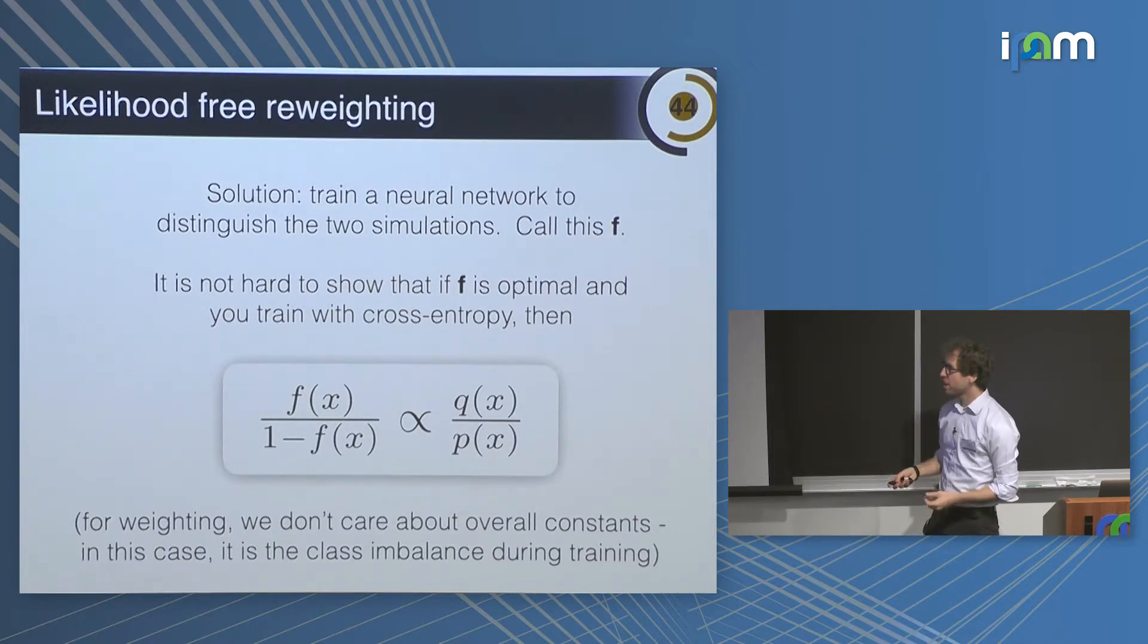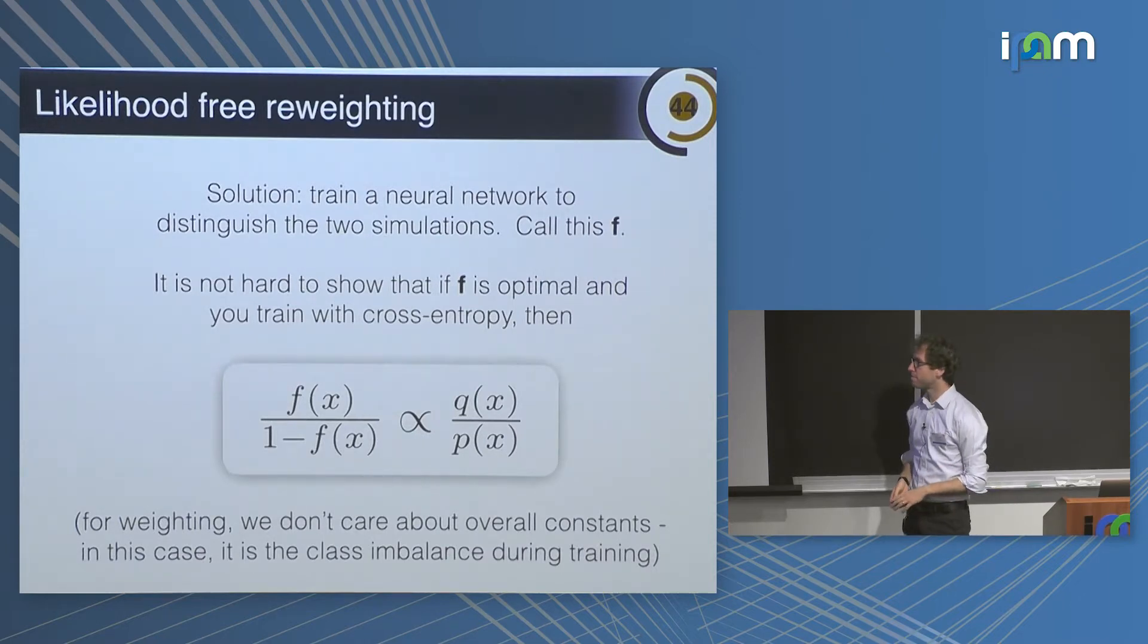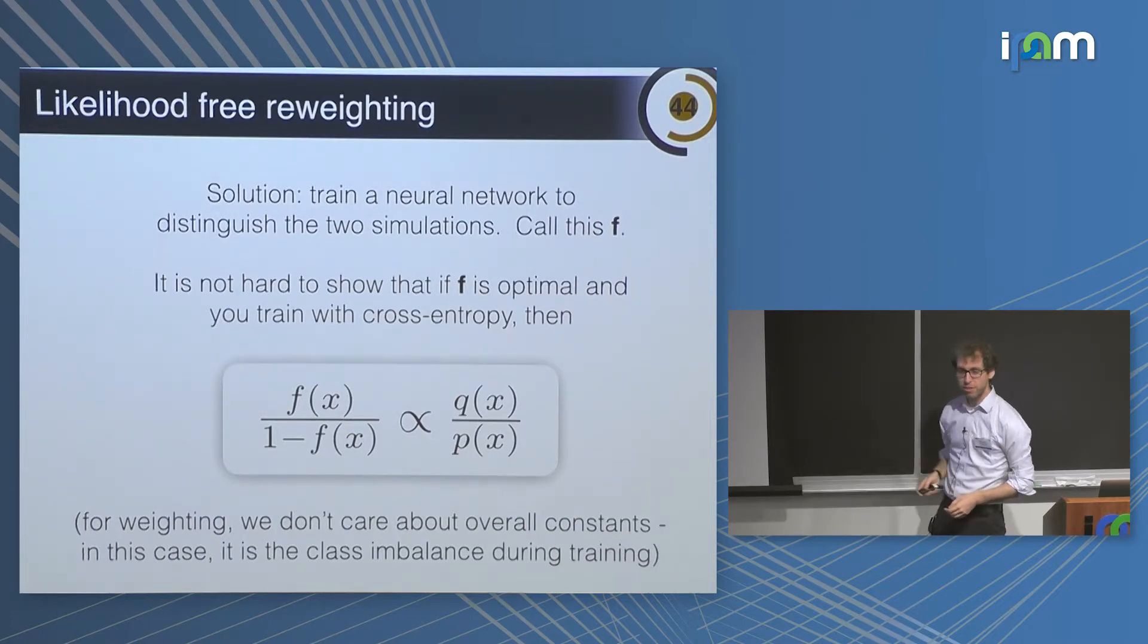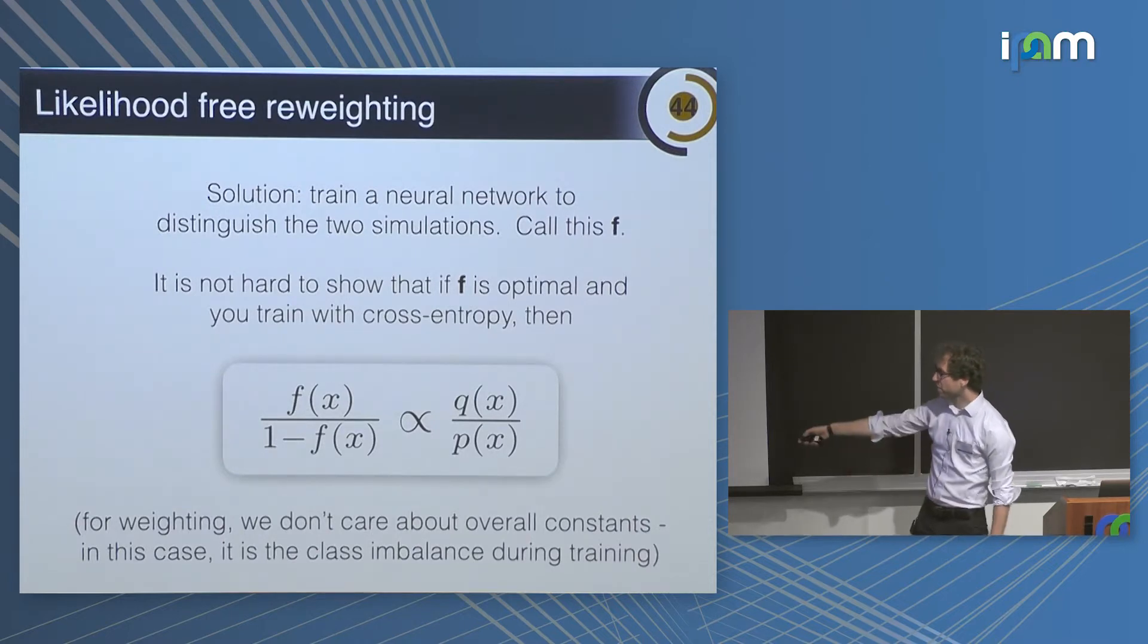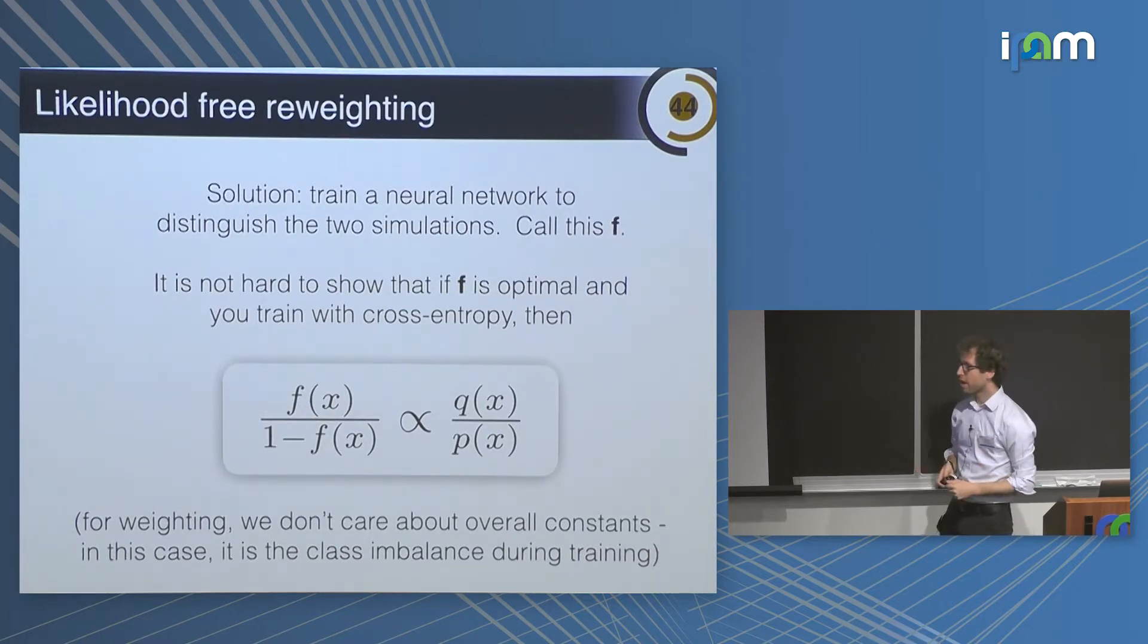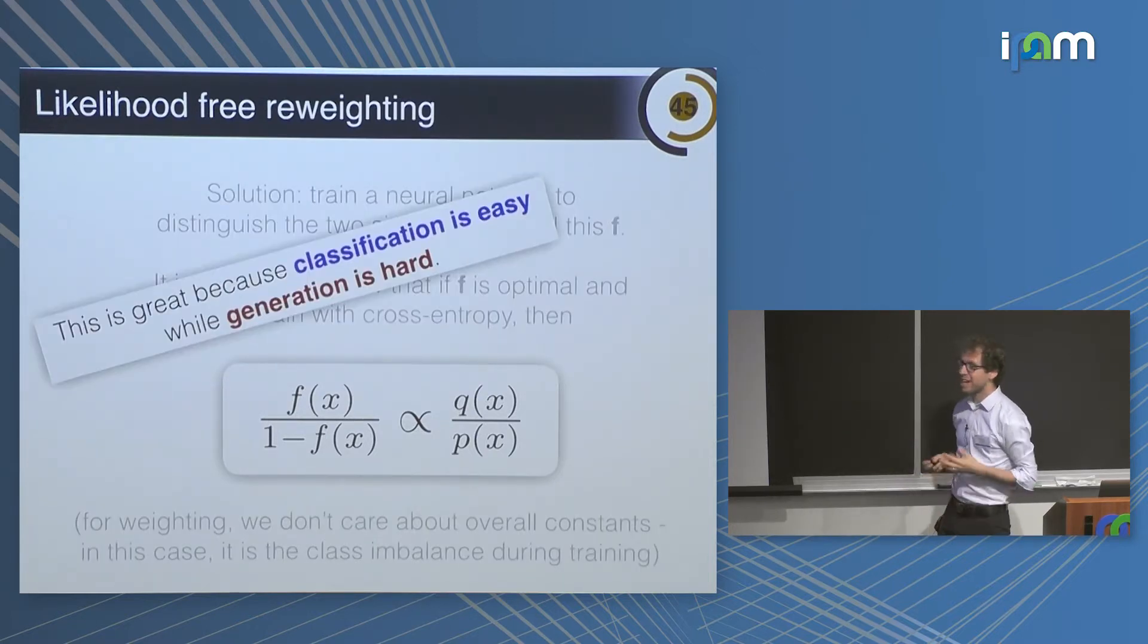So instead, the idea is very simple. Train a neural network to distinguish the two samples. I have my P sample, my Q sample, I can sample from them. The classifier is optimal in the Neyman-Pearson sense, and you train with cross entropy. It turns out you can train with many different loss functions. This particular combination of the output of the neural network is proportional to the likelihood ratio. And in fact, for reweighting, you don't care about the proportionality constant because if it's an overall constant, it doesn't matter. However, in this case, you can also derive the proportionality constant if you want to know.